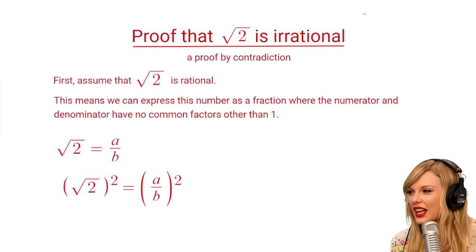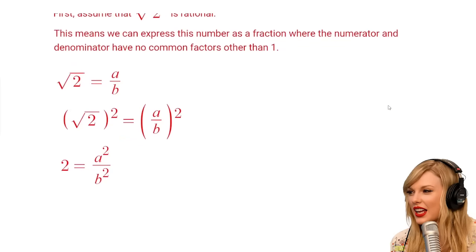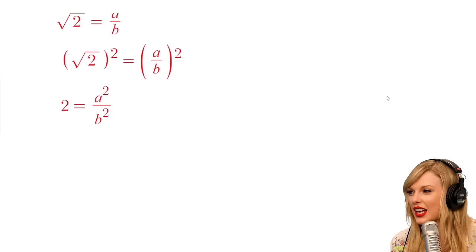Now, square both sides of the equation to obtain 2 equals the quotient A squared divided by B squared. Now, multiply both sides by B squared to get rid of the fraction. 2 times B squared equals A squared.